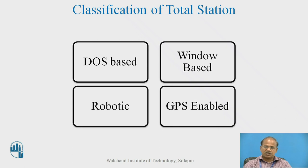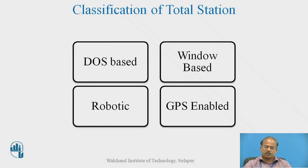Another classification of the total station is the robotic total station. In the robotic total station you do not need an operator with the instrument. A person with the reflector, whosoever is moving on the field, is automatically sensed by the instrument, and accordingly the line of sight will be directed and auto focus will happen.